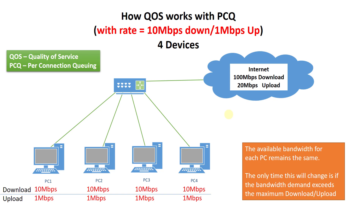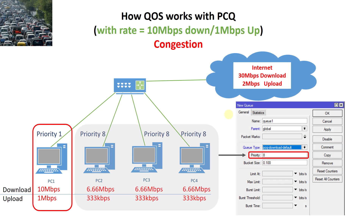Say for instance your network is congested — a lot of traffic is flowing through, a lot of persons are browsing, streaming and so forth. With a rate limit that is set to 10 megabits down and 1 up. For this scenario I used a lower download speed and a lower upload speed just to make the figures a bit more realistic.